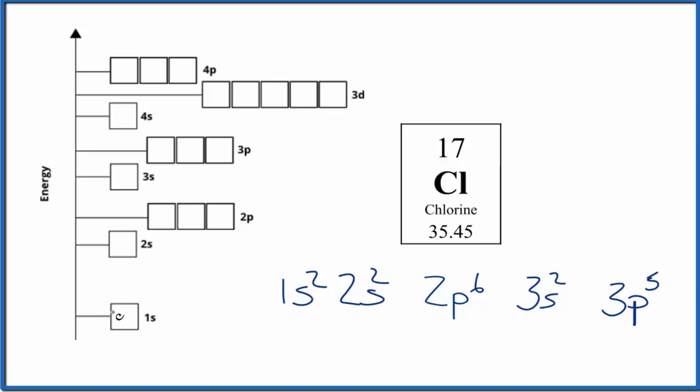We have 1s2, so we put 2 electrons in opposite directions there. 2s2, then 2p6—we spread them out first, and then we pair them up.